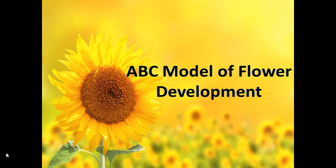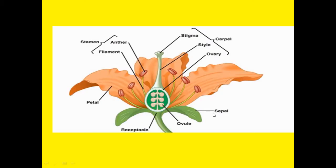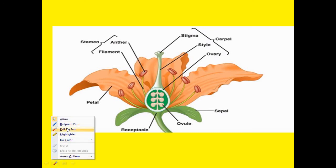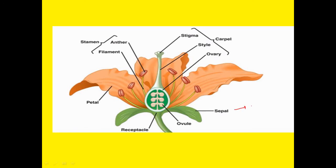Hello friends, today in this video we will discuss the ABC model of flower development. This model explains the genetics behind the formation of different whorls in a flower. There are four different whorls: the sepal, the outermost one; the petal, the bright colored one; the stamen, which consists of anther and filament; and the carpel, which consists of stigma, style, and ovary — also the innermost one.